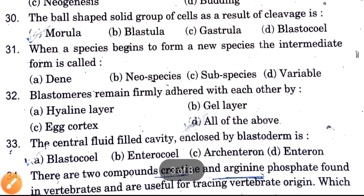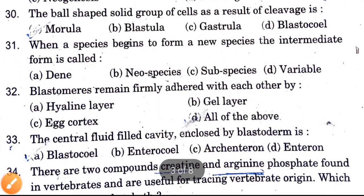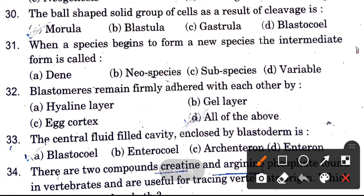The ball-shaped solid group of cells as a result of cleavage is — options are morula, blastula, gastrula. The answer is morula.